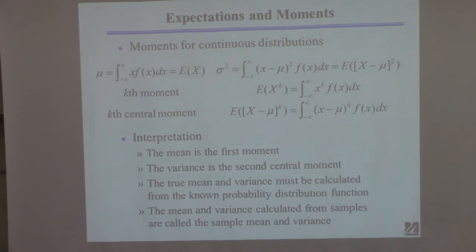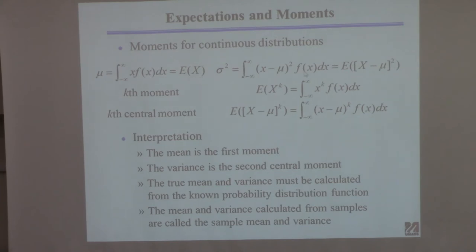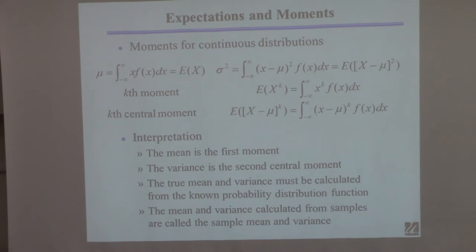The true variance is calculated by taking the distribution function, multiplying by x minus mu squared, and integrating. That's the true variance. To do that you need to know the function f. For most problems of practical interest you never will know f, but there still is a true mean and a true variance. The expectation operator notation E[(x - mu)^2] represents our expectation of what the variance would be. We won't use this expectation operator a lot, but you will see it.